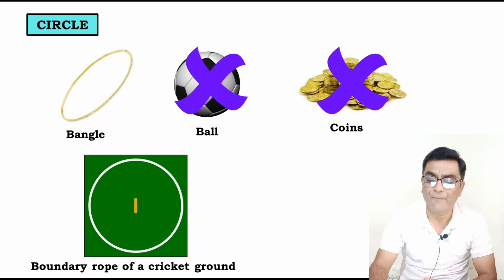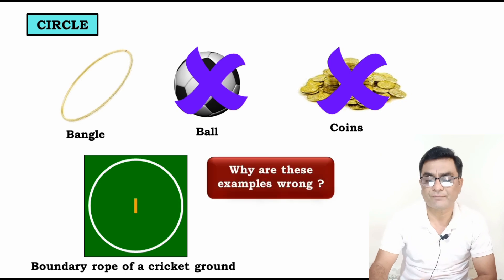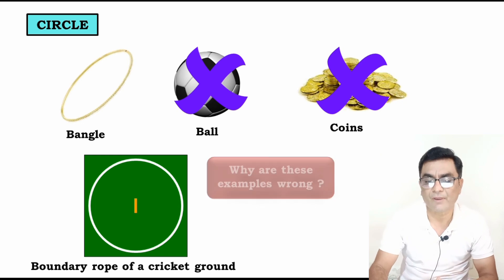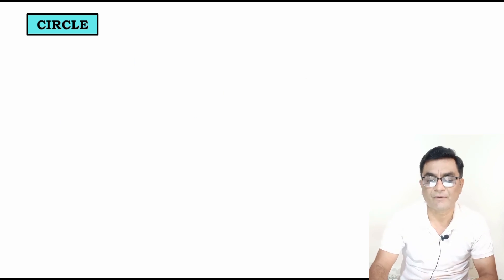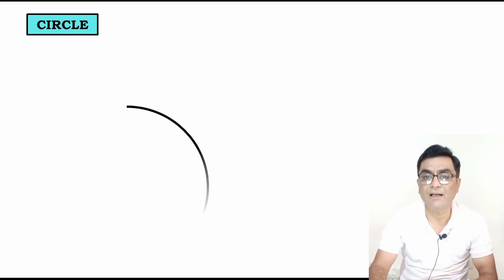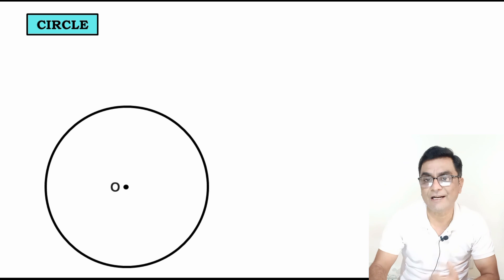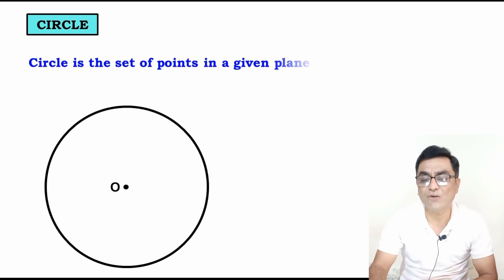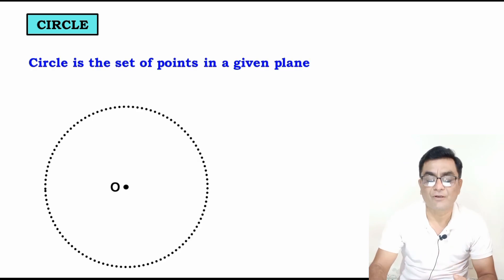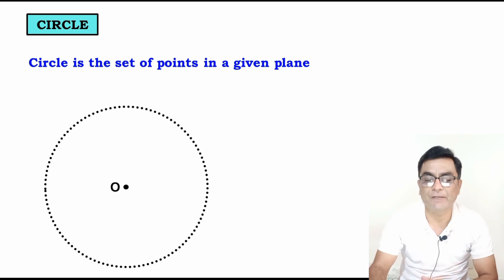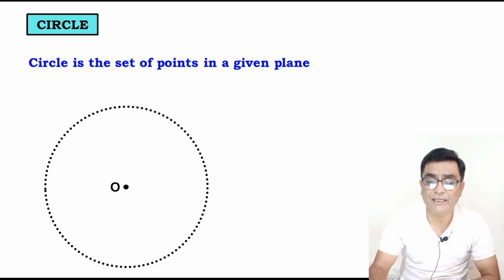What is wrong about them? Let us understand what a circle is. O is the center. Circle is the set of points in a given plane. Here is the definition of a circle.